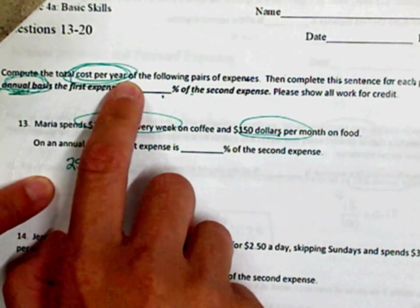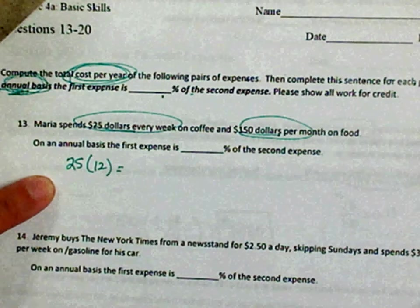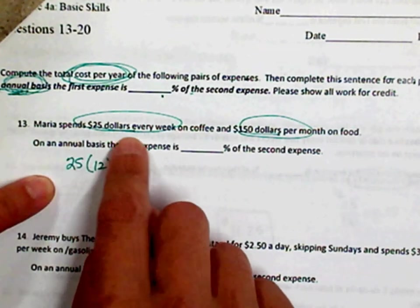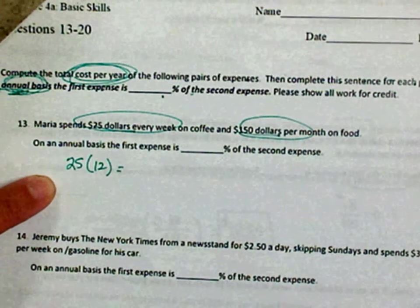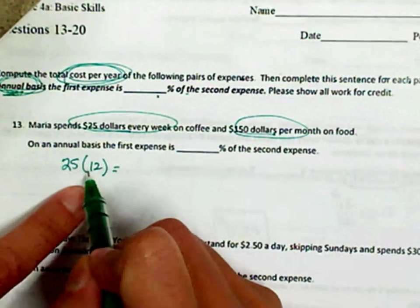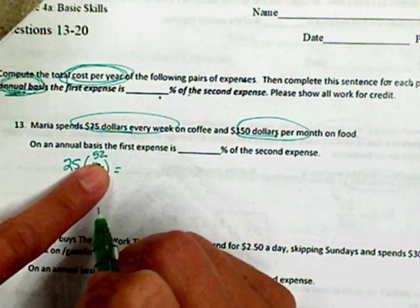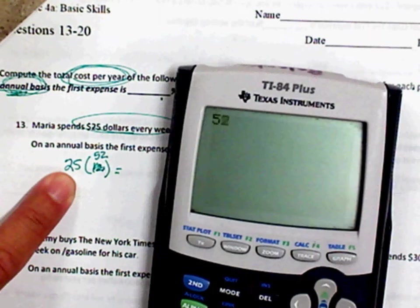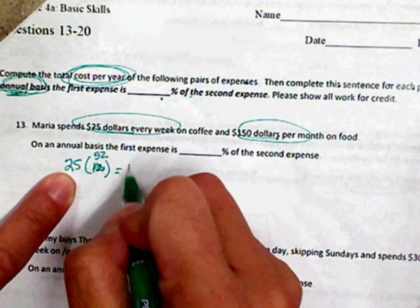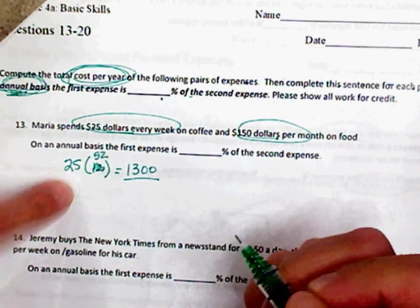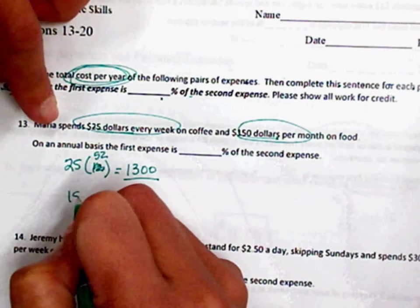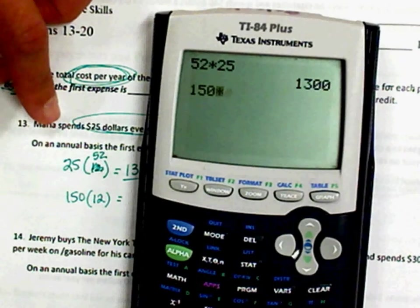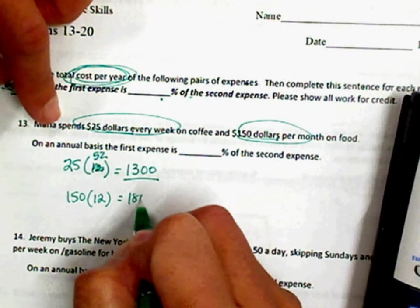Compute the total cost per year of the following. So you're going to compare for the whole year. Maria spends $25 every week, okay? So for every week, there are 52 weeks in a year. We're going to multiply 25 times 52. So Maria spends $1,300 every single year on coffee and $150 per month. There's 12 months in a year. So that comes out to be 150 times 12. That gives you $1,800.